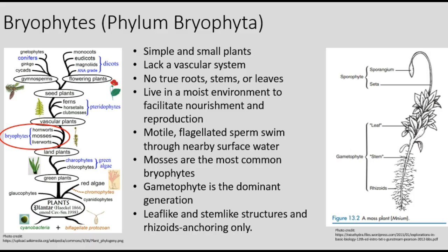The phylum Bryophyta includes mosses, liverworts, and hornworts. Bryophytes are simple and small plants. They do not achieve great sizes because they lack a vascular system through which organic molecules, minerals, and water can travel. They also do not have true roots, stems, or leaves. Subsequently, they must live in a moist environment to facilitate nourishment and reproduction.